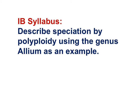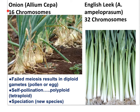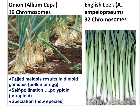The relevant IB syllabus statement is: describe speciation by polyploidy using the genus Allium as an example. Allium cepa has 16 chromosomes. English leek, Allium ampeloprasum, has 32 chromosomes. English leek is a different species, most likely because of meiotic error resulting in polyploidy — two sets relative to Allium cepa. Polyploidy occurs when you have failed meiosis resulting in diploid gametes, self-pollination, and this forms new species.